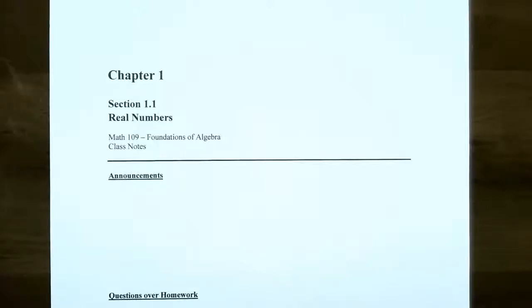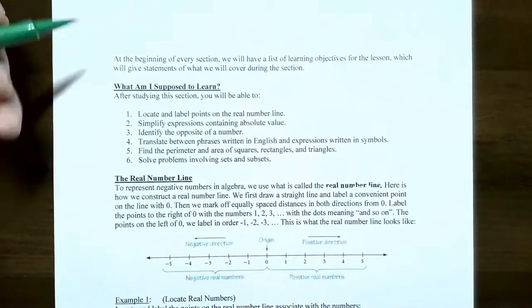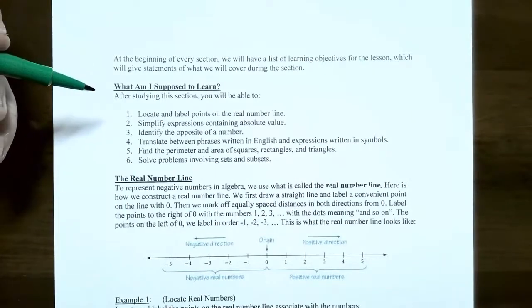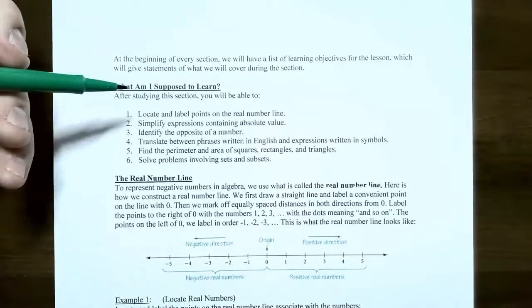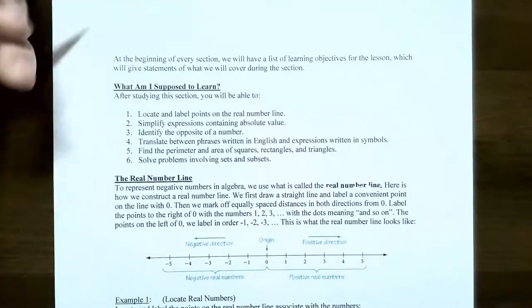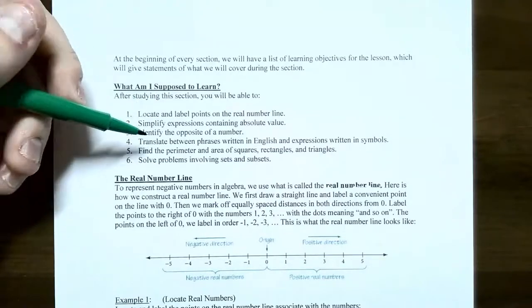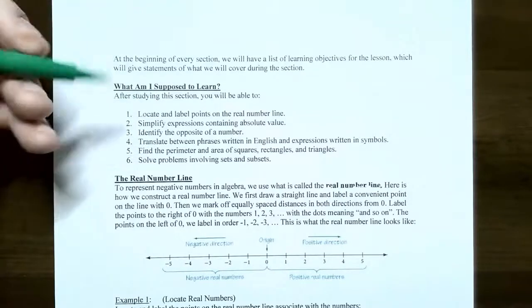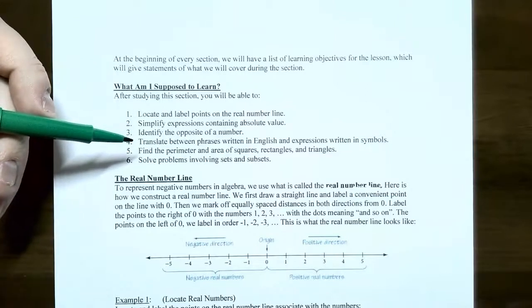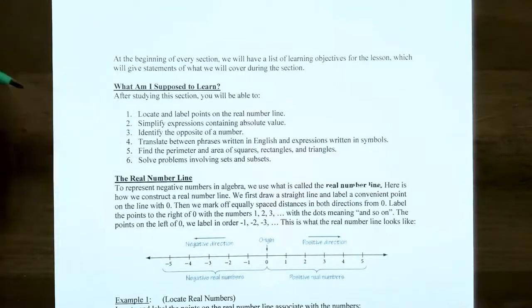Hi everyone, it's Professor Permanent. In this video we're going to finish up our discussion on real numbers. In the previous video we talked about how to locate and label points on a real number line, simplify expressions containing the absolute value, how to identify the opposite of a number, and then we finally translated phrases between English and written in mathematical symbols.